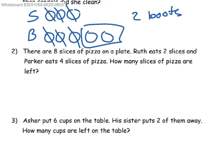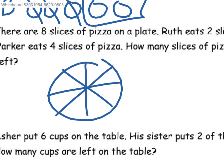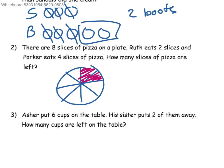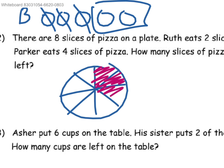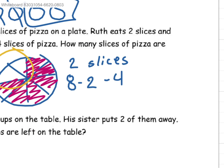There are 8 slices of pizza on a plate. Ruth eats 2 slices and Parker eats 4 slices. How many slices of pizza are left? So this would be our pizza sliced into 8 different pieces. Ruth eats 2 slices and Parker eats 4. Now you can see that there are 2 slices of pizza left. You can also simplify this to 8 minus 2 minus 4, or in other words 8 minus 6, which is equal to 2.